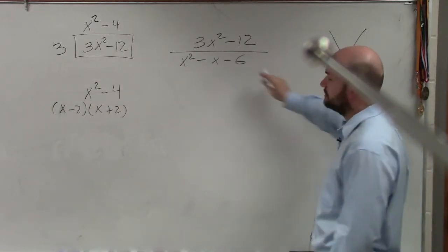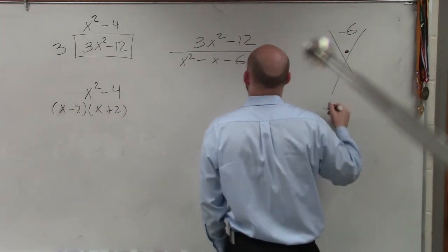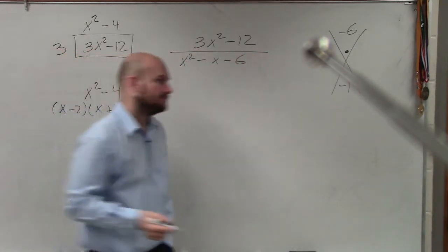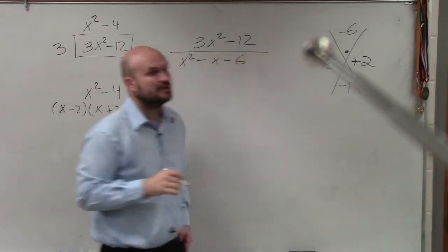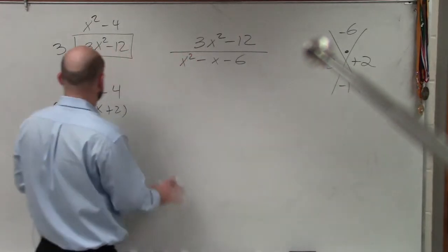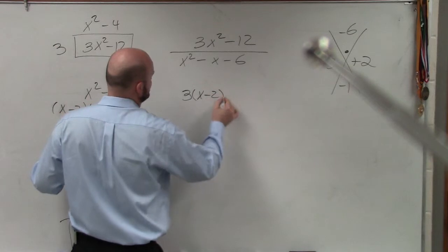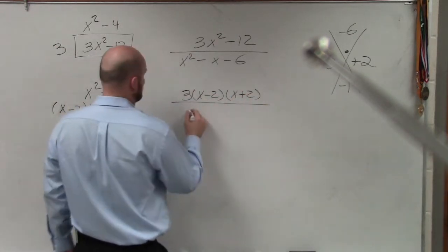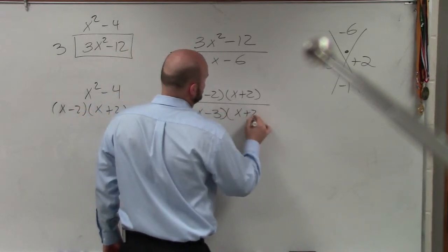Then we go over here. This is a trinomial. When factoring trinomials, we create the box and ask: what two numbers multiply to give us negative 2 and add to give us negative 1? That's going to be negative 3 and positive 2. Since a is equal to 1, these are going to be part of our factors. So now let's rewrite everything in factored form: 3(x - 2)(x + 2) all over (x - 3)(x + 2).